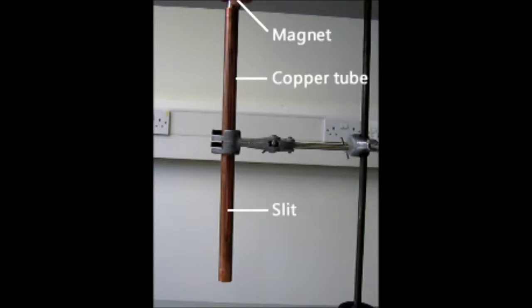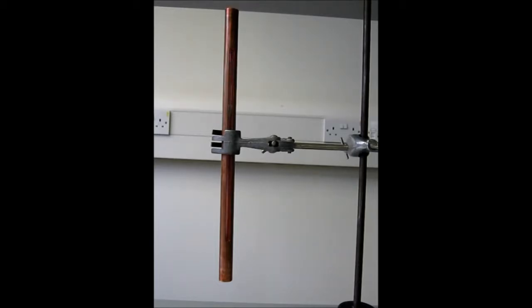Unlike iron, copper is not a magnetic material, so the magnet won't physically stick to it. Therefore, a magnetic attraction cannot be the reason for any slowing in the fall of the magnet.